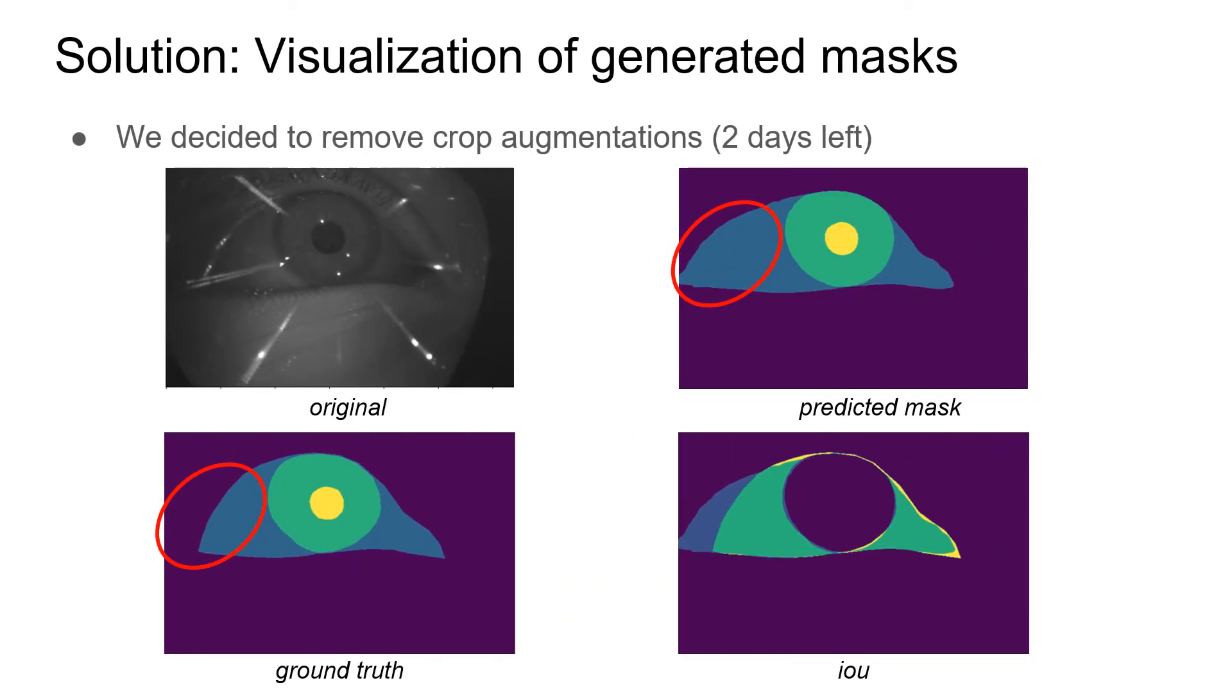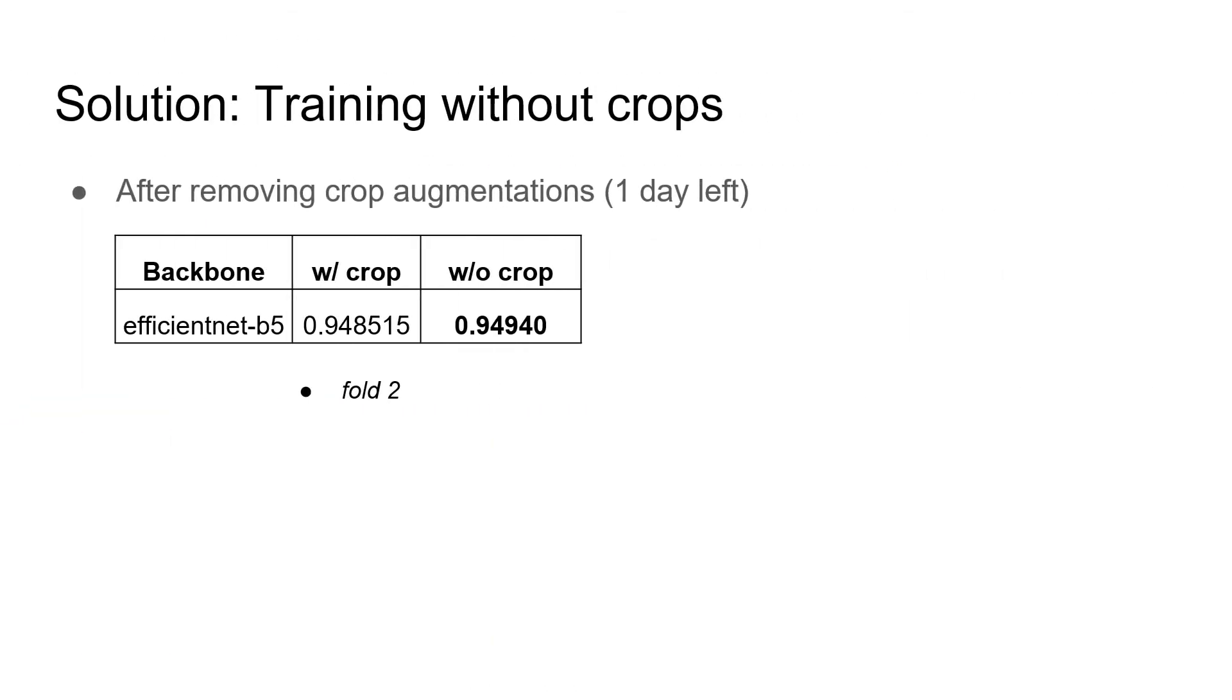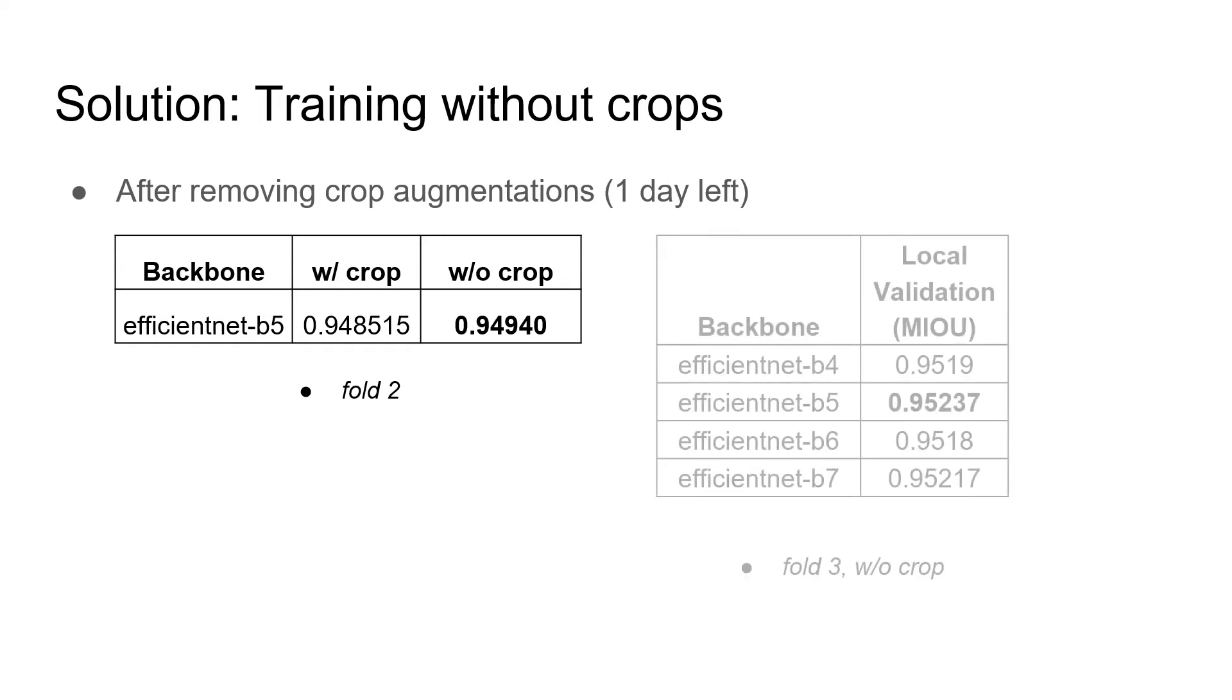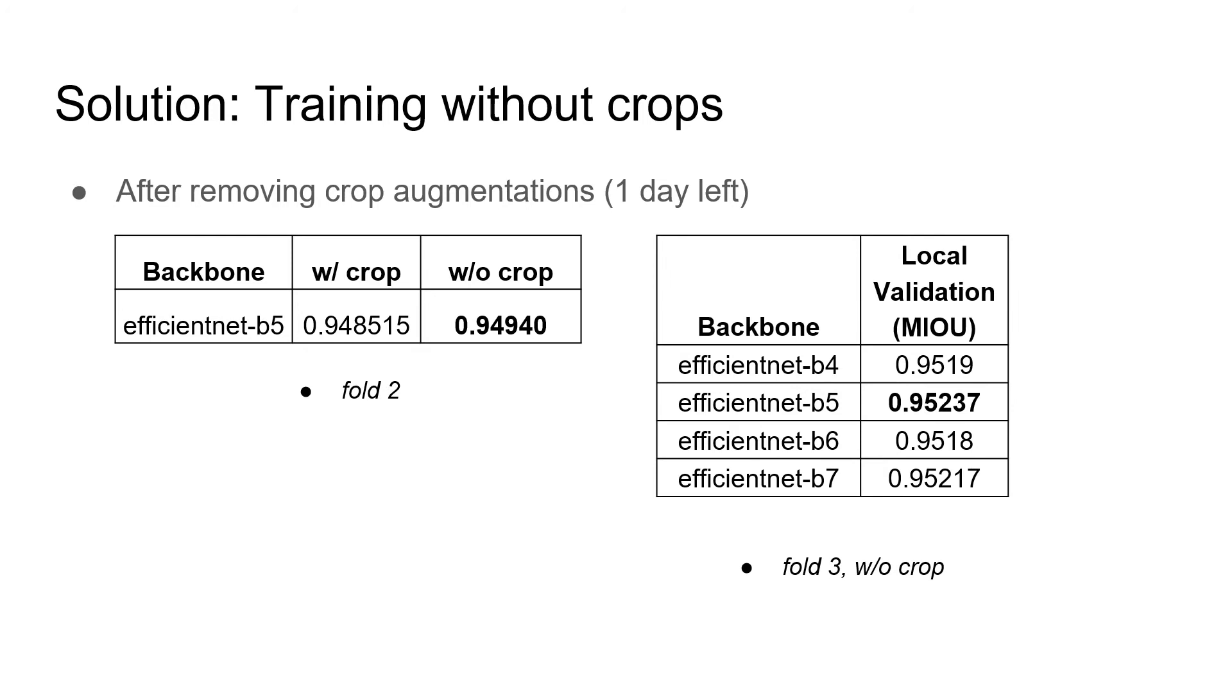As mentioned before, the sclera class is the hardest one to predict. Before 2 days to the deadline, we made a visualization of our predictions, and noticed that our model mostly made mistakes on the borders. We assumed it's because of the crop augmentations, so we decided to remove them. As you can see, the score improved after removing the crop augmentations. However, we had only one submission left. So we started training fold 3 without crop and got the highest results than all models that we trained before on the local validation.